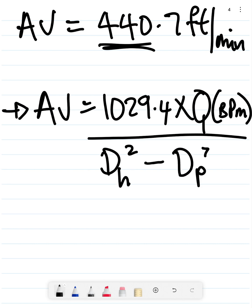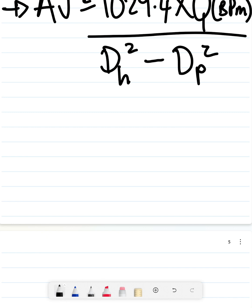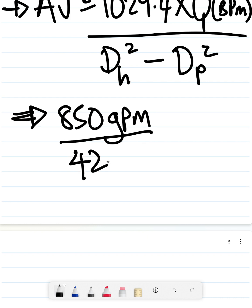Before we can apply this equation we have to convert our gallons per minute to barrels per minute. To do that, you just divide by 42. So 850 gallons per minute divided by 42 gives us 20.23 barrels per minute.